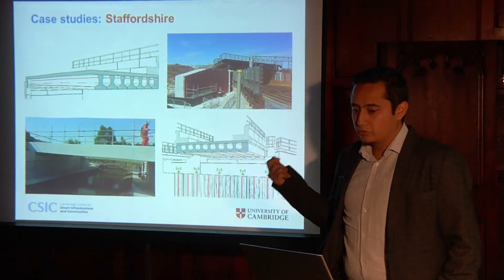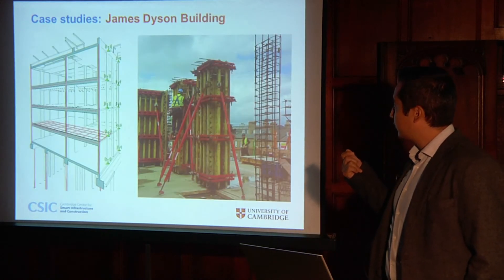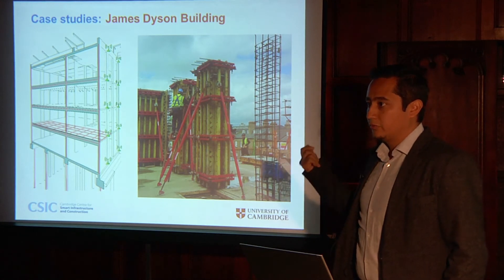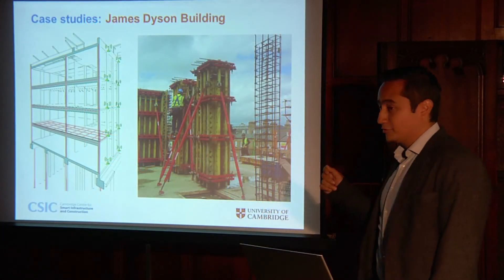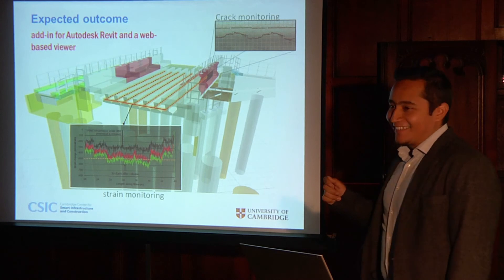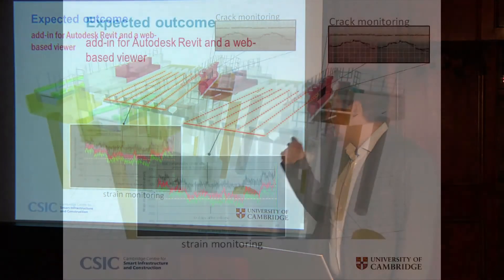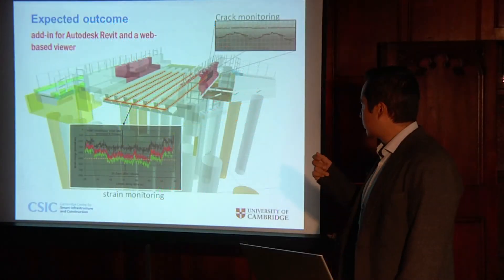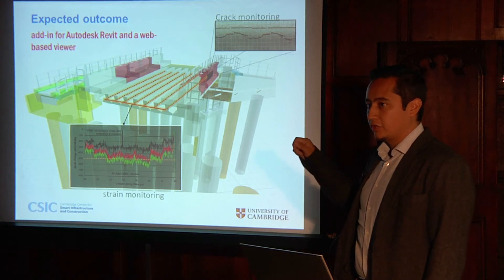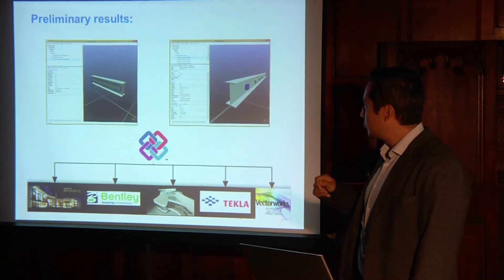We are also going to use the James Dyson building at the engineering department of the University of Cambridge. In this example, the James Dyson building has been instrumented with fiber optics in piles, columns, beams, and slabs. As we will see in the next slide, this is the expected outcome: a BIM tool where you can model your monitoring system and also use it to automate some of the structural health monitoring tasks, displaying all your data directly on the BIM model.